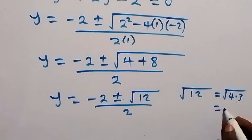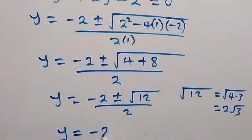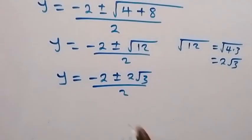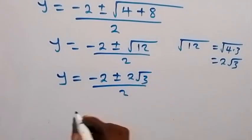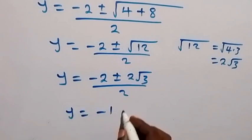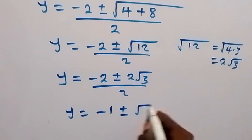We take out the factor and that will be 2 root 3. So we have y equals to minus 2 plus or minus 2 root 3, all over 2. Dividing through by 2, we now have y equals to minus 1 plus or minus root 3.